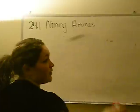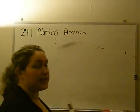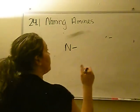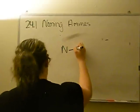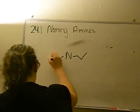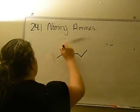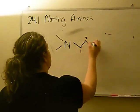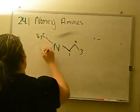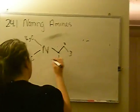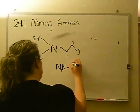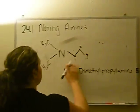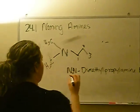Unsymmetrical secondary and tertiary amines are named as substituents on the N. So let's say we have a three-carbon chain and two CH3 groups attached to the nitrogen. We would say N,N-dimethylpropylamine, because the propyl chain gets the priority and the methyl groups are the substituents attached at N, N.